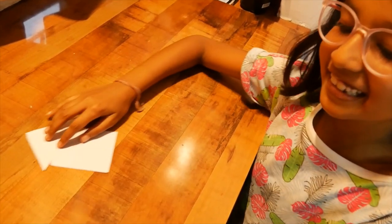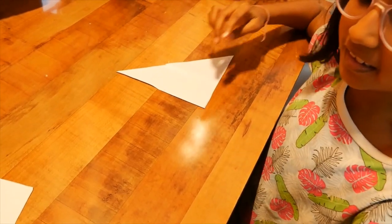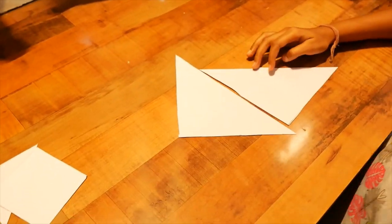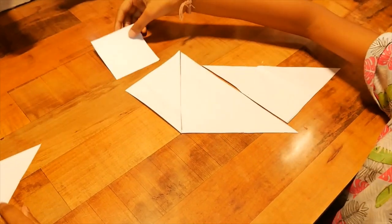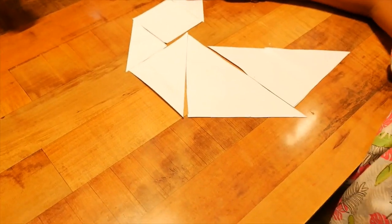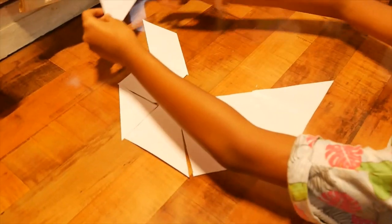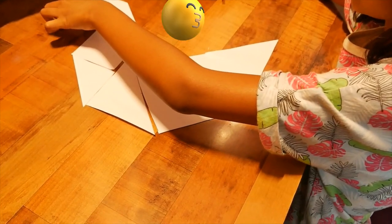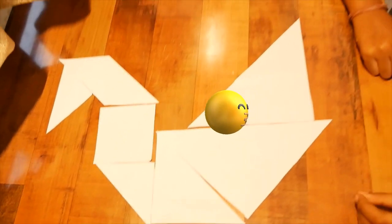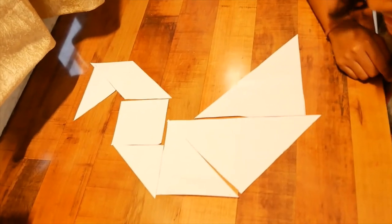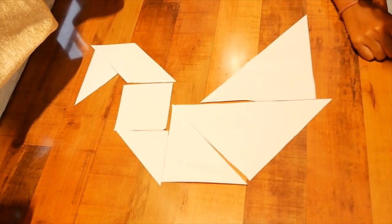Good. You have made a duck. Very nice. This is good. Now, you have used all the seven tans. Very good.